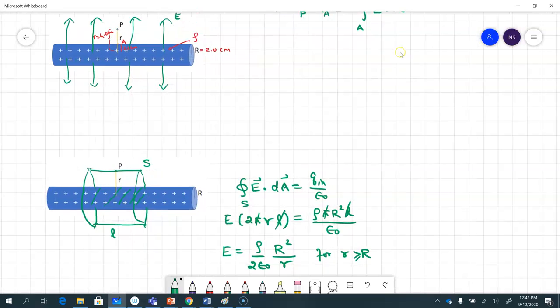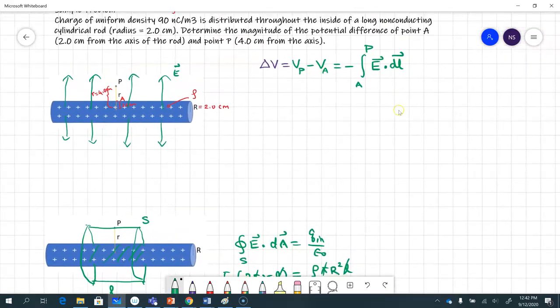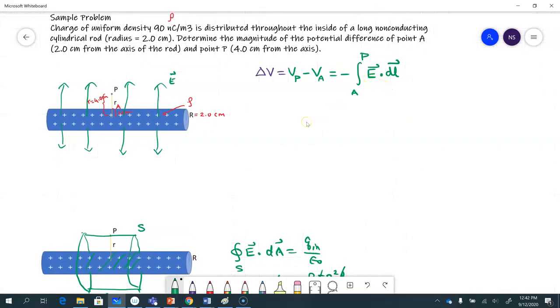So I'll bring this down here. So I need to substitute for the electric field. So when I do the integral, I've got the electric field, which is this way. And then you have the DL vector. And the DL vector, I'm also moving from A to P. So that's the DL vector, which is in the same direction.